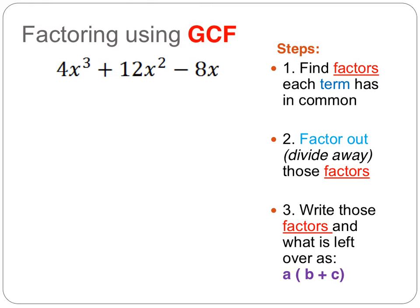In our worked example, we look at each term individually and identify common factors. First, we look at the greatest common factor between the numbers 4, 12, and 8 — leaving the negative sign as is for now. Our greatest common factor between those numbers is 4, since it's the largest number that divides into each one and can't be bigger than the smallest value.